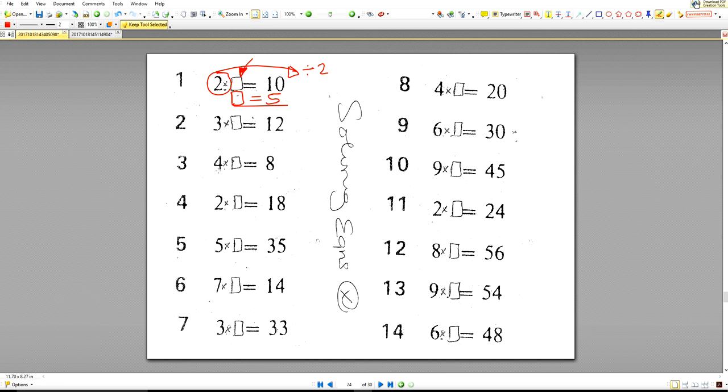If I want to work out four times by something, it's eight. Opposite of times by four is divide by four. So the box is equal to two. Job done.